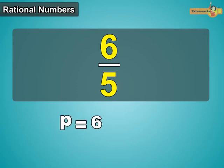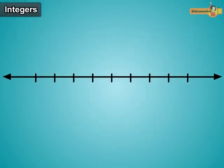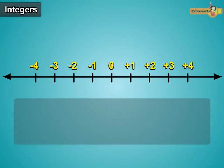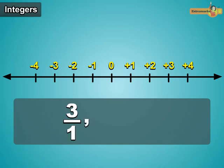Every integer is a rational number. For instance, the number 3 can be written as 3 upon 1. 0 can also be written as 0 upon 3 or 0 upon 5.